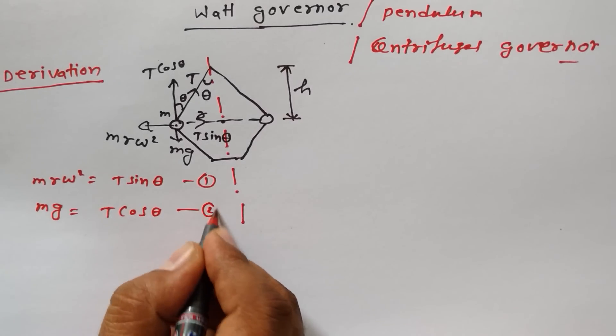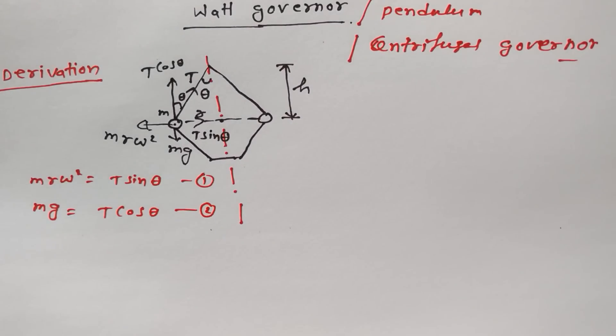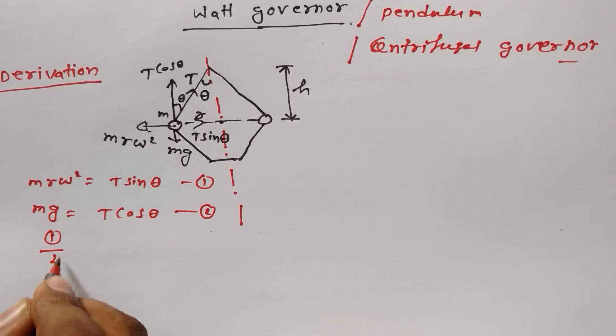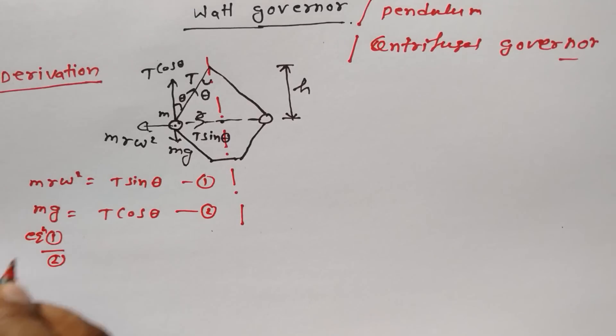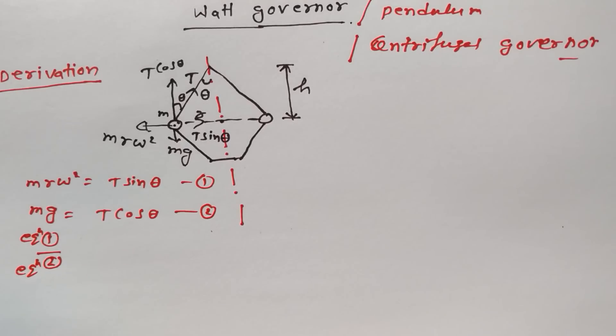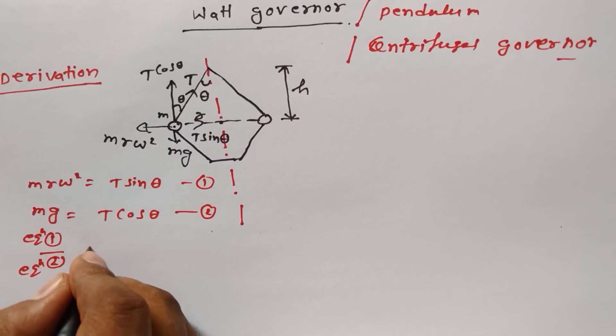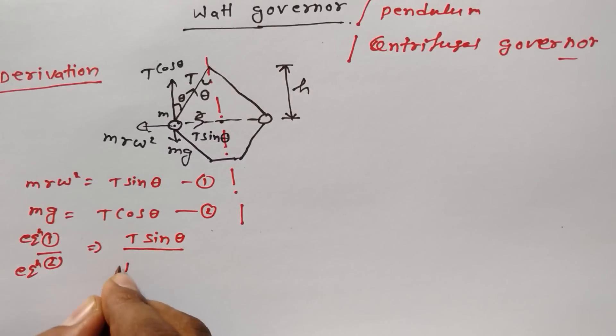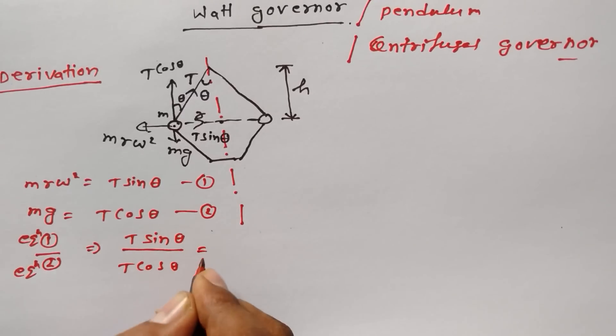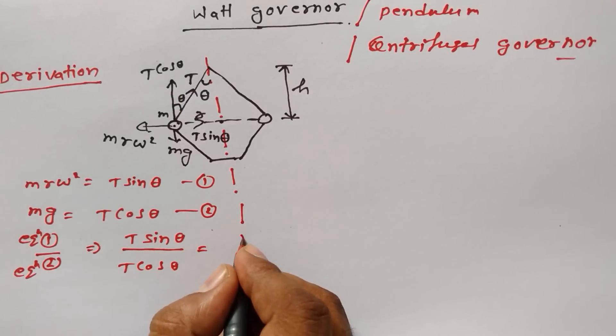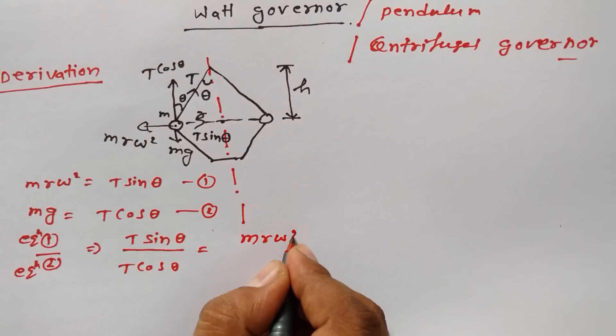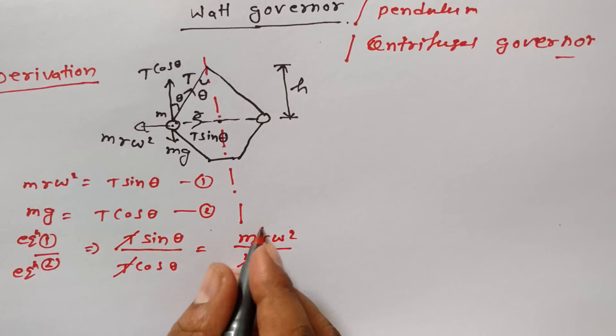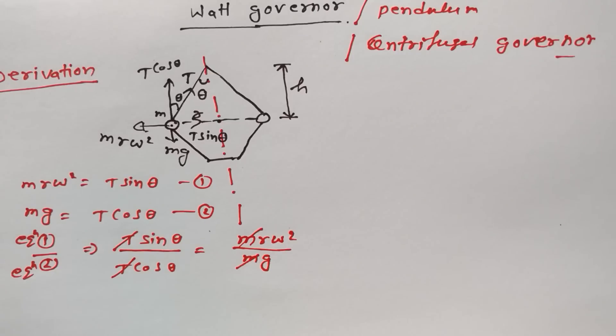Now what I can do is equation 1 divided by equation 2. T*sin(θ) by T*cos(θ) equals mr*ω² by mg. T cancels out, m cancels out.